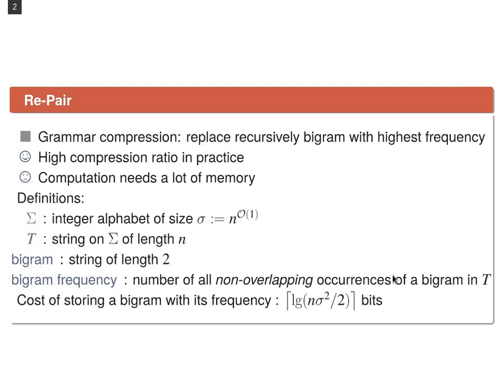In practice REPAIR achieves very high compression ratios but current algorithms need a lot of memory. In this talk we focus on integer alphabets so sigma denotes an integer alphabet and T a string on it of length n. When we want to store a bigram along with its frequency we need this amount of bits where a frequency is of at most n over 2.